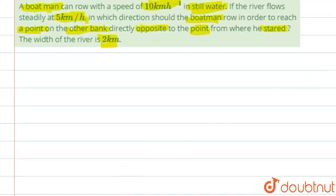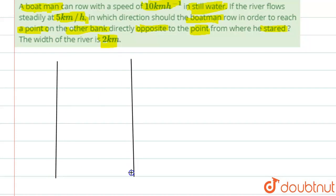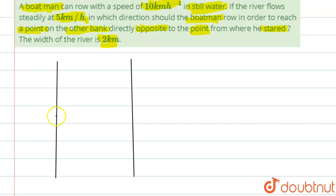The width of the river is given as 2 kilometers. Let's draw the diagram to understand it. Let's suppose this is the river — one shore of the river and the other shore of the river. There is a boatman over here with a boat.